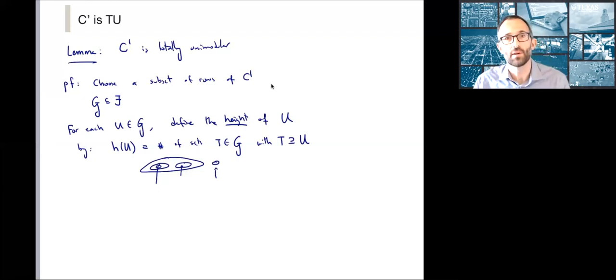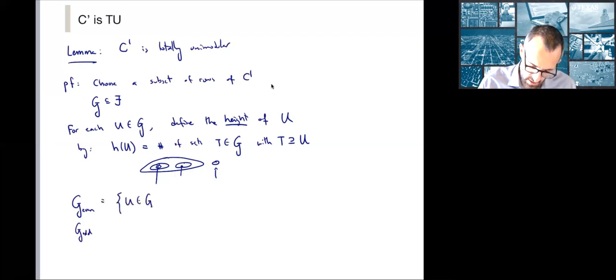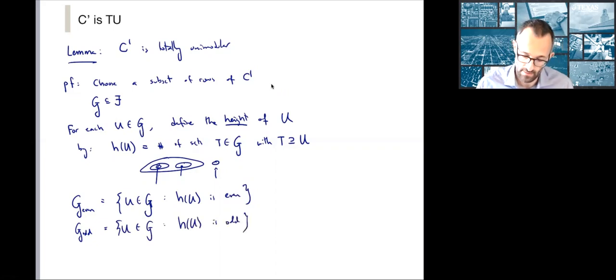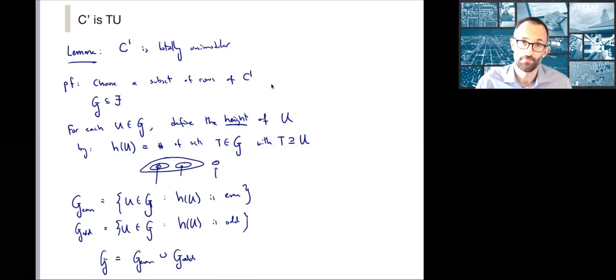This is what's going to allow me to partition the set of rows into two subsets, and I'm going to do it according to the parity of the height. Let me define G even and similarly G odd to be all U in G such that its height is even, and similarly for odd, U in G such that H of U is odd. Obviously G is equal to G even union G odd.